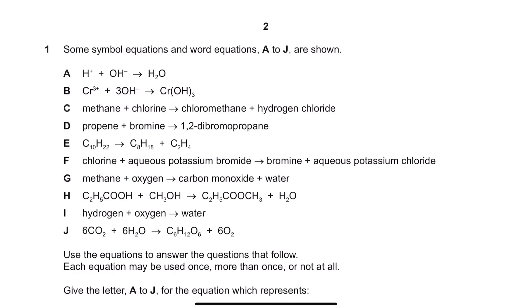Question 1. Some symbol equations and word equations A to J are shown. Use the equations to answer the questions that follow. Each equation may be used once, more than once, or not at all. Let's first identify the reactions from A to J.